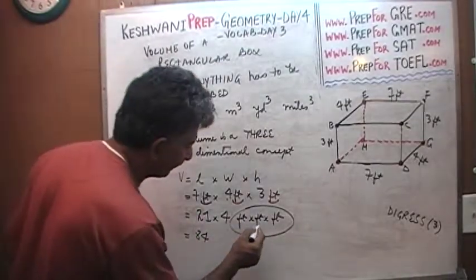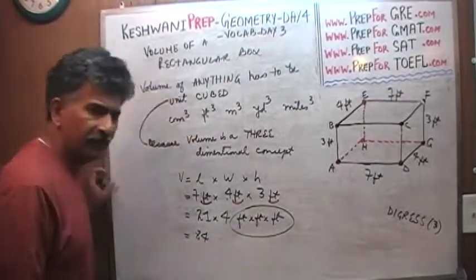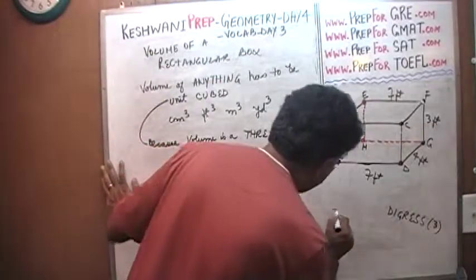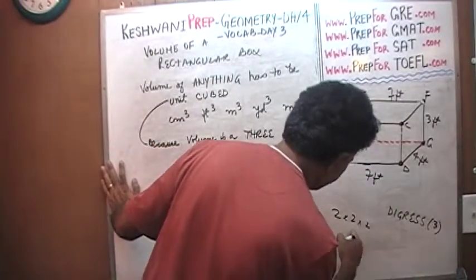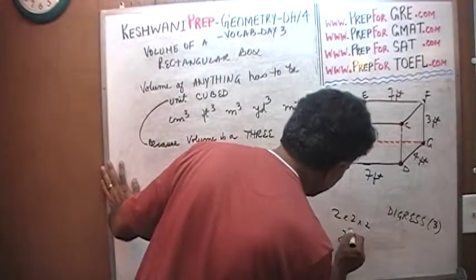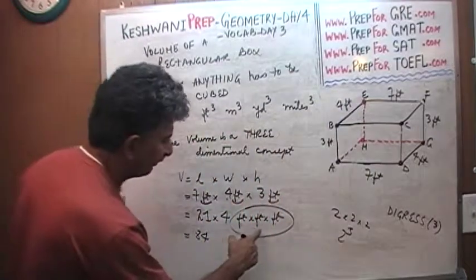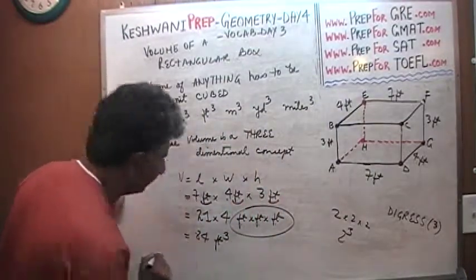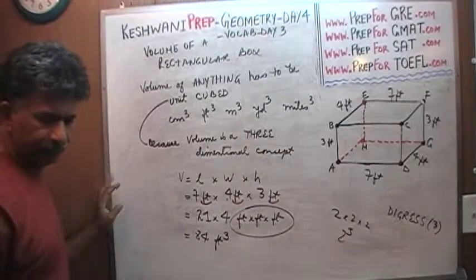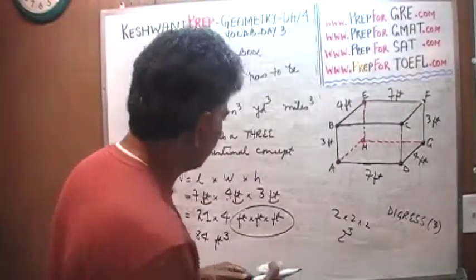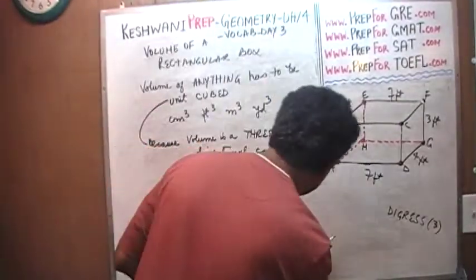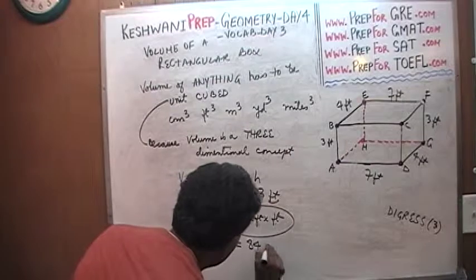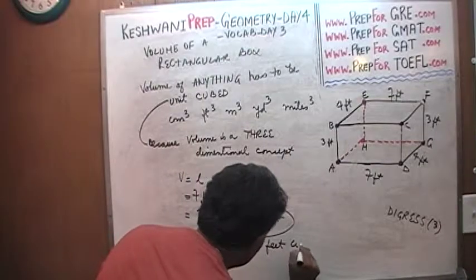Now we have to figure out feet times feet times feet. What is feet times feet times feet? Well, what is two times two times two? Two times two times two is two cubed. Same thing here — feet times feet times feet is feet cubed. So this quantity is actually 84 feet cubed.